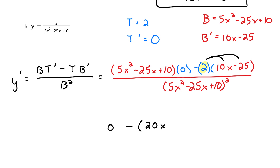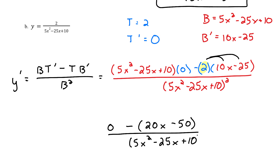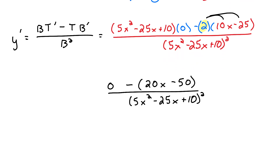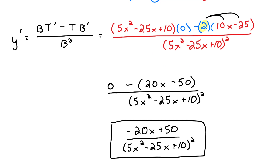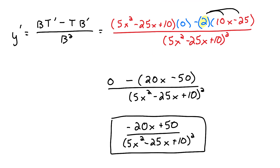So the derivative is negative 20x plus 50, all over 5x squared minus 25x plus 10, quantity squared. You could factor out a 10 from the numerator, but I'm going to leave it as is.